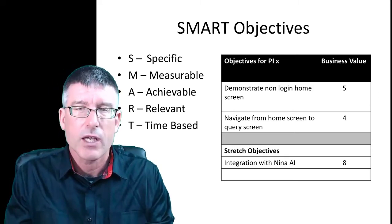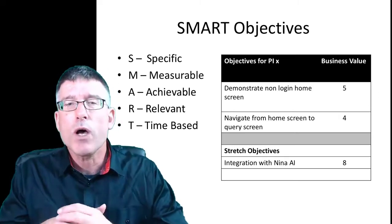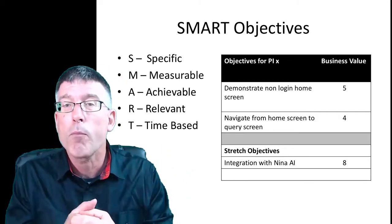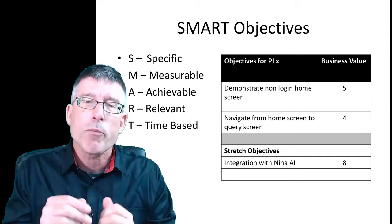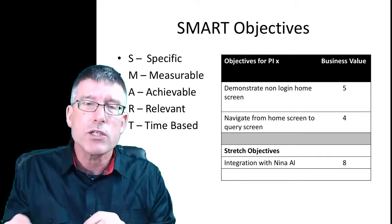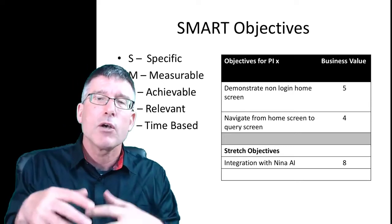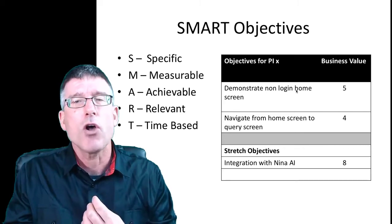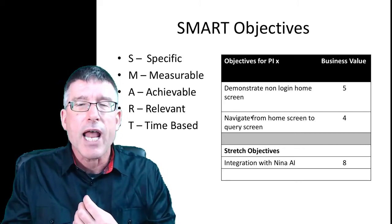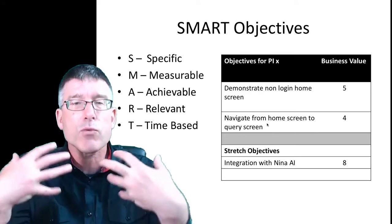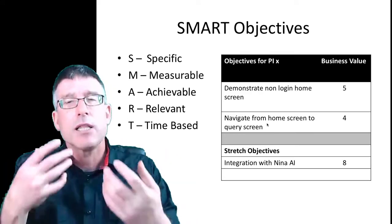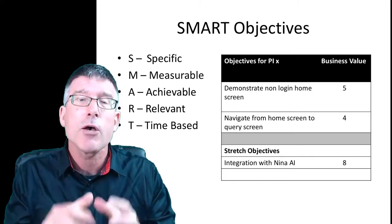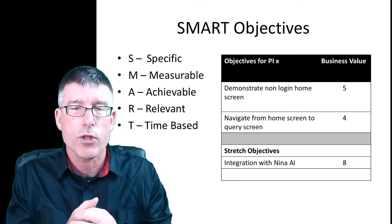This chart shows what our objectives for a PI might look like — this could be from a team or the overall program objectives. It's divided into two sections. We have the objectives we're committing to — for example, demonstrate non-login home screen, navigate from home screen to query screen. These are things we're saying we will be able to do. They're probably represented by a feature or maybe a couple of features, but these are the objectives the team is making for the PI.